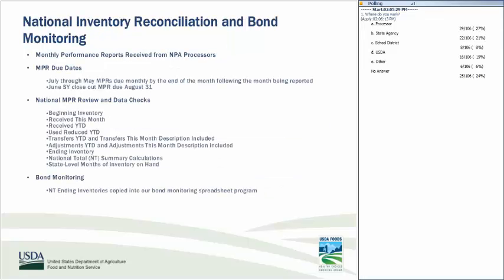National NPRs are received from processors participating in the National Processing Agreement. July through May NPRs are due by the end of the month following the month being reported, while the final June NPR is due by August 31st. Each National NPR goes through validation checks: beginning inventory quantities are verified against the prior month's ending inventory, and received-this-month quantities are verified against goods receipts in WebSCM.